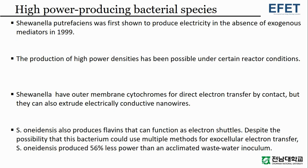Shewanella putrefaciens was first shown to produce electricity in the absence of exogenous mediators in 1999. High power densities have been possible under certain reactor conditions. Shewanella has outer membrane cytochromes for direct electron transfer by contact, but can also extrude electrically conductive nanowires. S. oneidensis also produces flavins that function as electron shuttles, yet despite multiple exocellular electron transfer methods, it produced 56% less power than an acclimated wastewater inoculum.